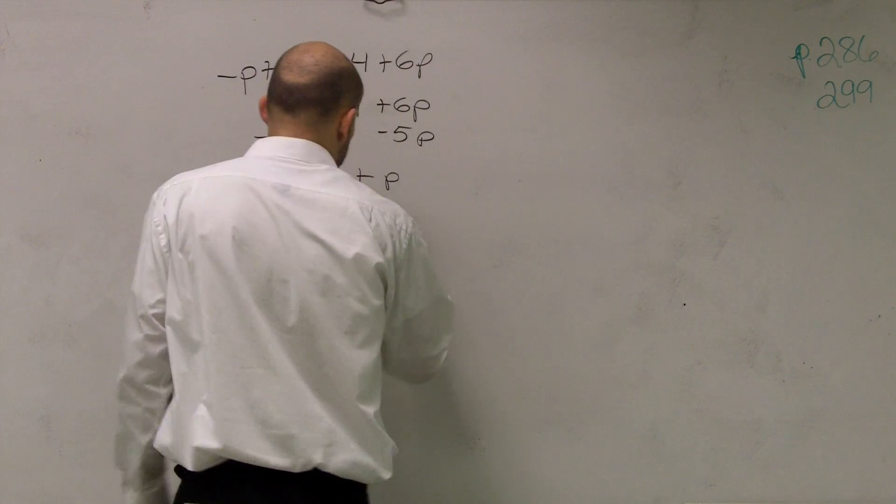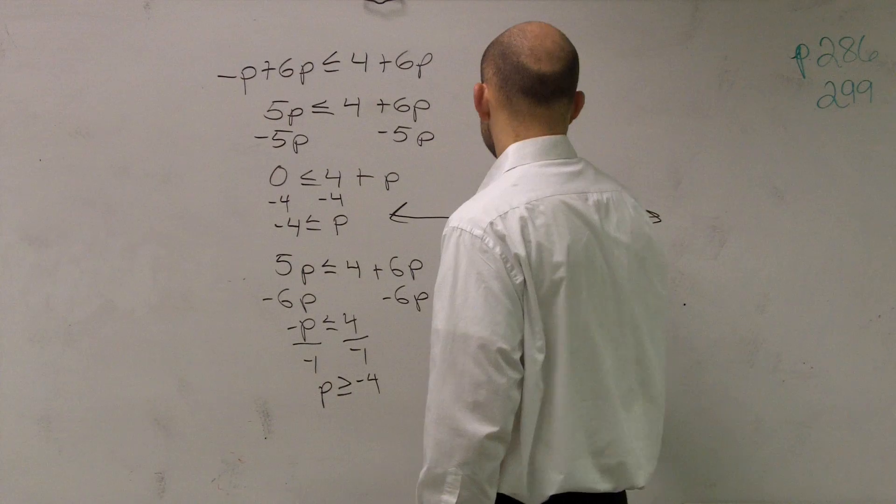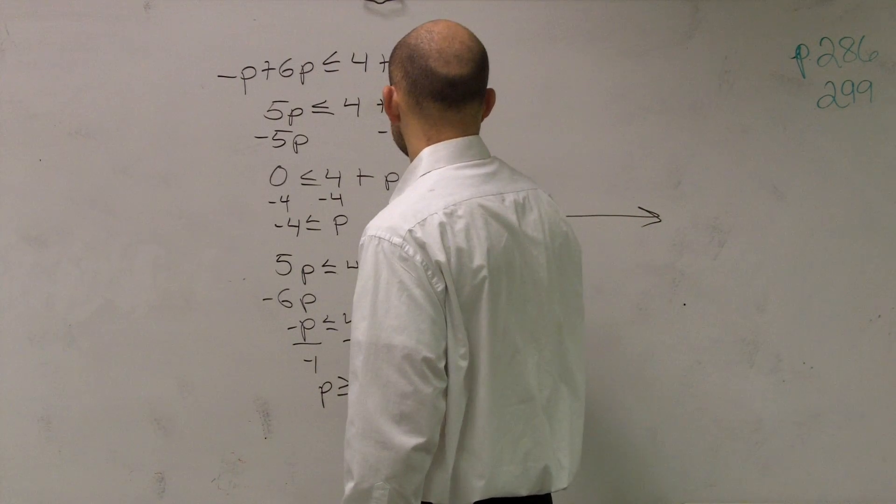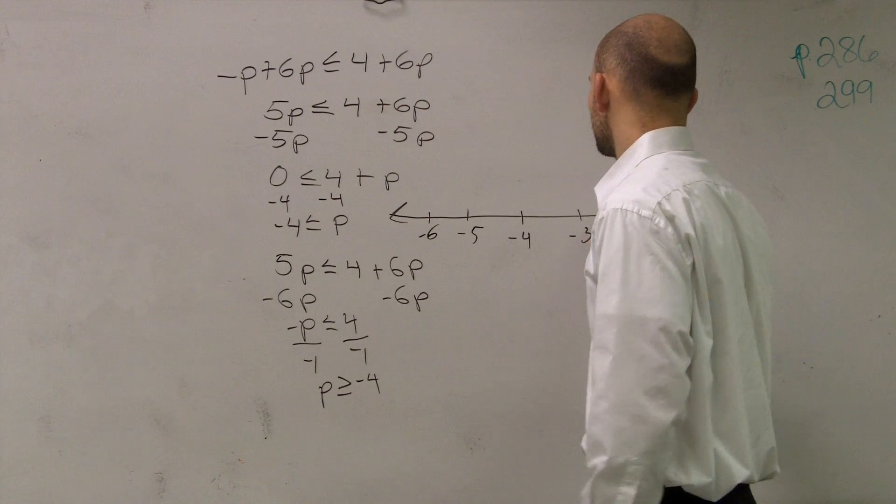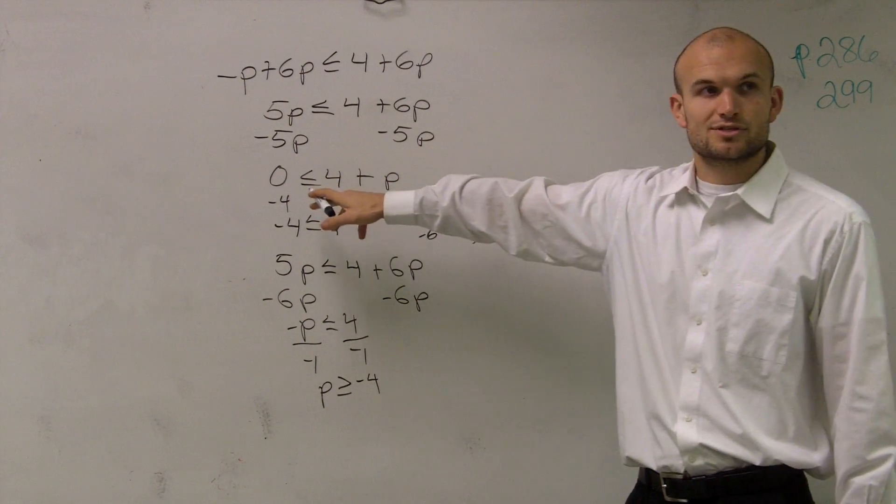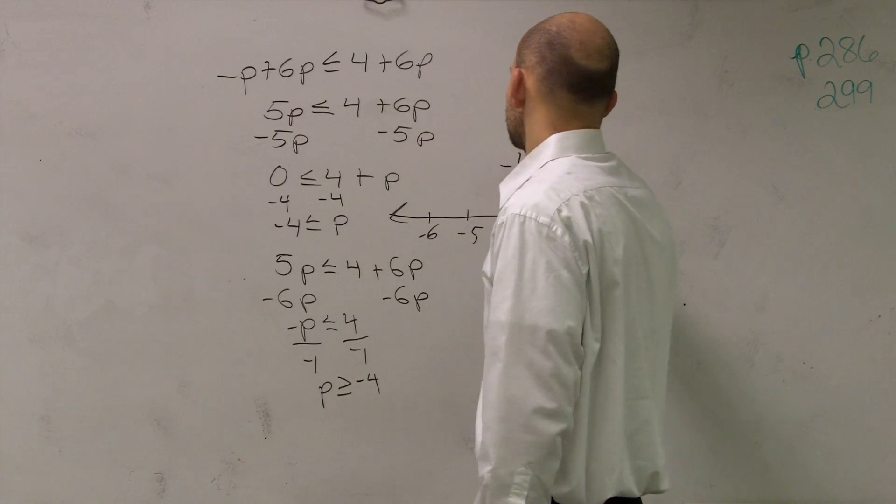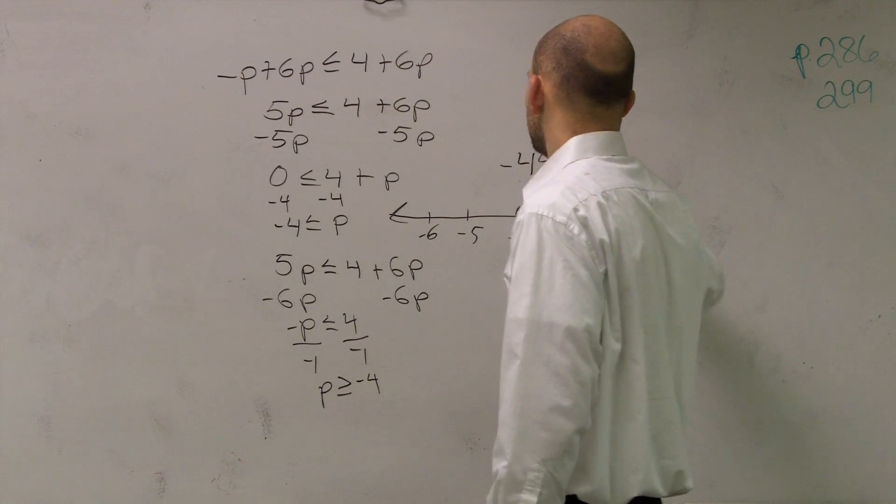So how are we going to graph this? I go down to negative 4. The era would be negative 5, negative 6, negative 3, negative 2. Make a nice big dot. Is that less than or equal to? Yes, it's less than or equal to, so therefore, it's a closed dot.